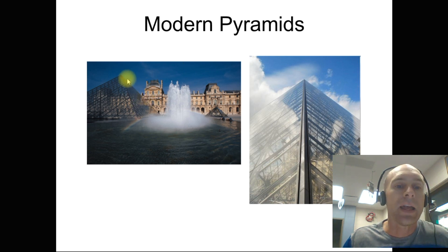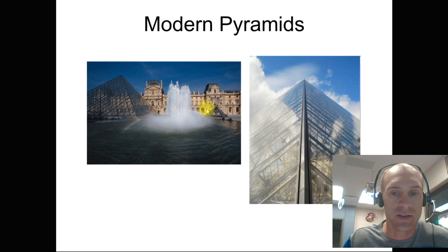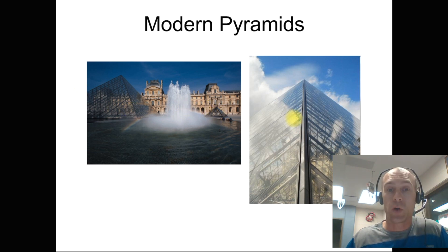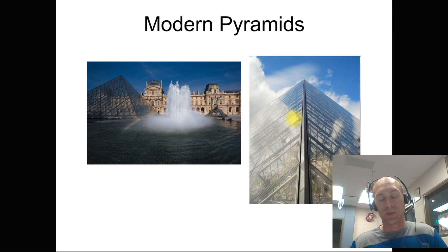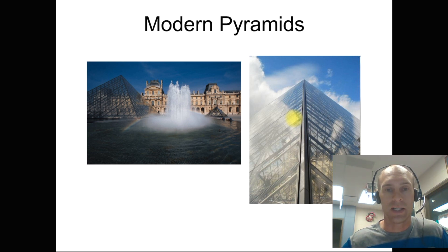The Louvre in France has a modern pyramid — there's a museum underneath, and the pyramid serves as a skylight you can look up through. Aesthetics means designing something just because you think it looks pretty or neat.